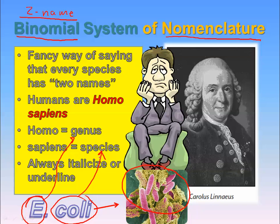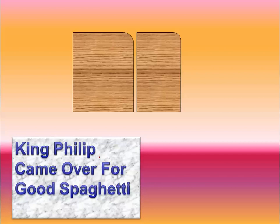Everything that's out there that we've identified has been categorized like this. The thing is, that's only two parts of the name — Homo sapiens. There's actually more to it. So let's take a look. Remember this: King Philip came over for good spaghetti. Or you can make something else up.